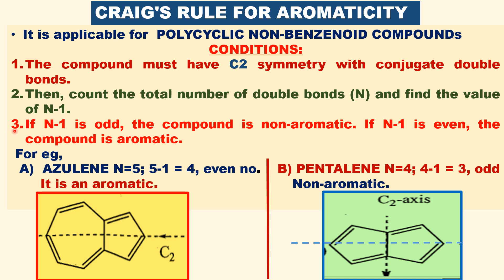Let us now apply the third condition. For azulene, there are 5 double bonds, so N equals 5. N minus 1 equals 5 minus 1 equals 4, which is an even number. Therefore, it is aromatic. According to this condition, it is aromatic because N minus 1 is an even number.